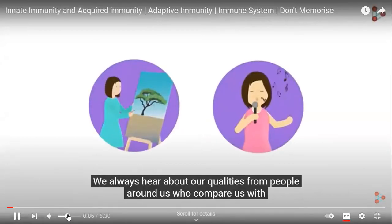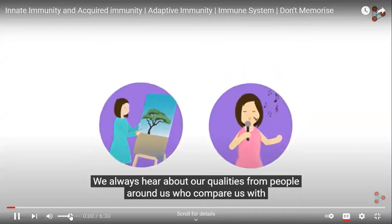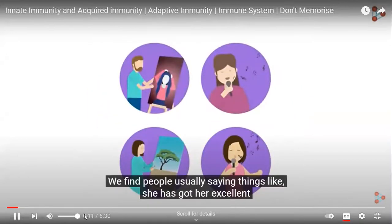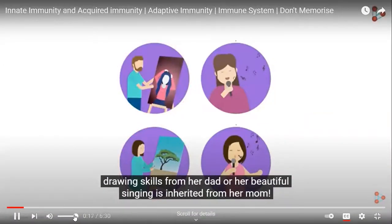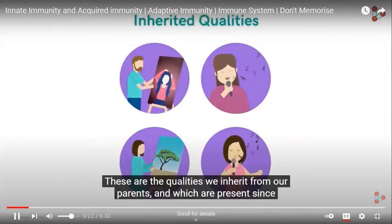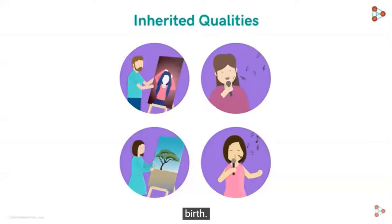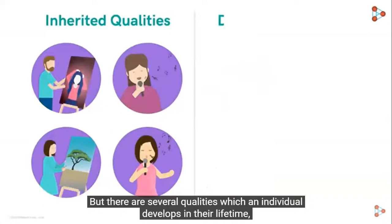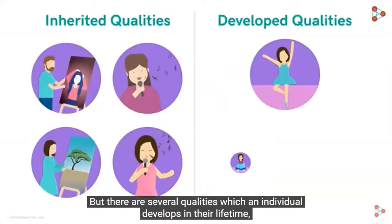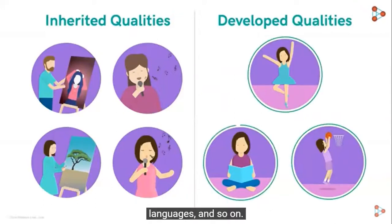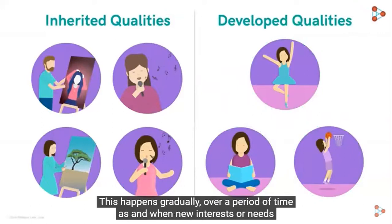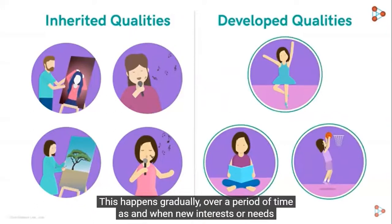We always hear about qualities from people around us who compare us with our parents. We usually find people saying things like, she's got her excellent joint skills from her dad, or her beautiful features are inherited from her mom. These are the qualities we inherit from our parents and which are present since birth. But there are several qualities which individuals develop in their lifetime depending on their interests and needs, like developing certain abilities, learning key languages, and so on.